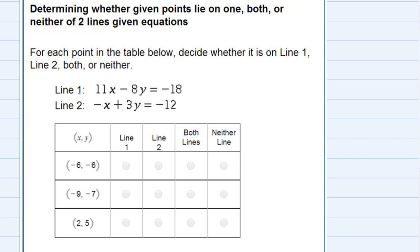So I'm going to test this middle point, and first I'm going to try it for line 1. So in line 1, if I replace the x with negative 9 and I replace the y with negative 7, and I get a true statement, then that means it must be on the line.